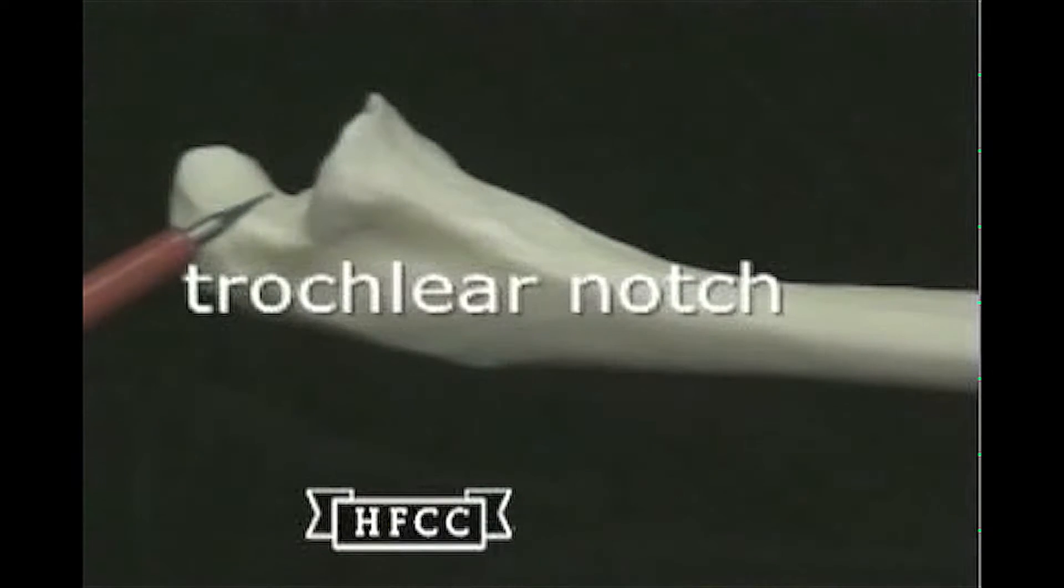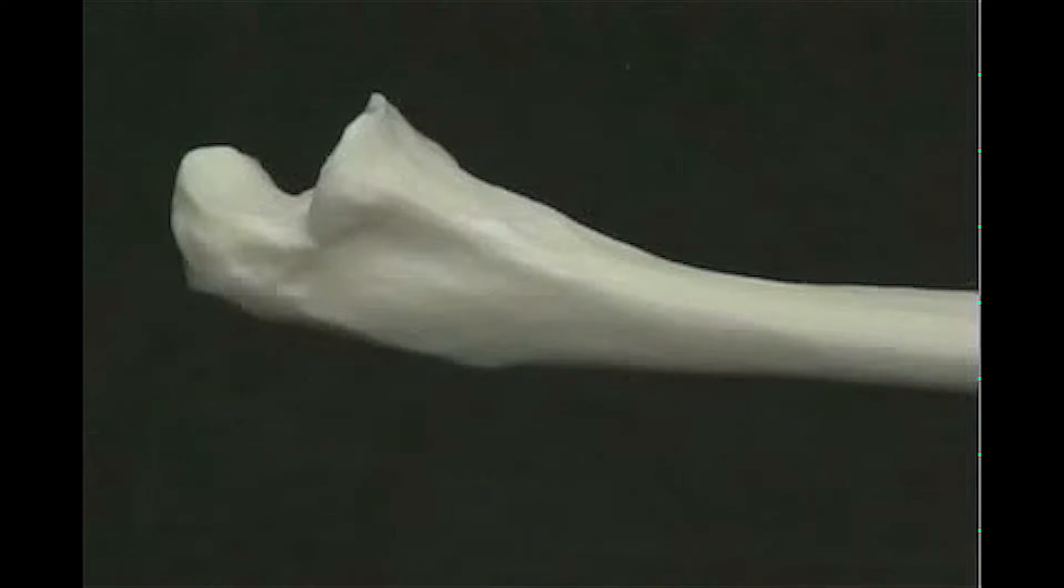First is this little trench or notch here that I've encircled, called a trochlear notch, because this articulates with the trochlea of the humerus.